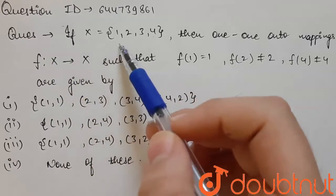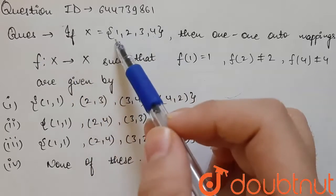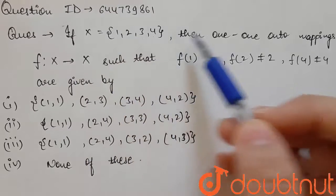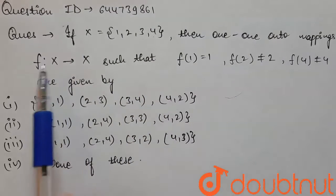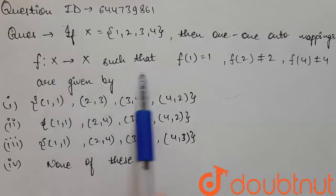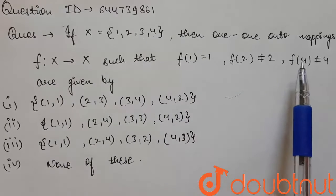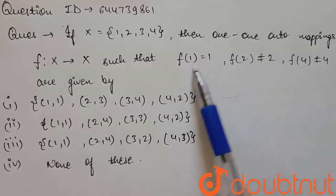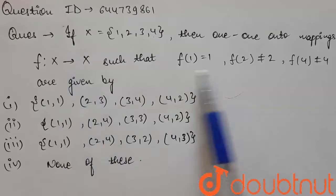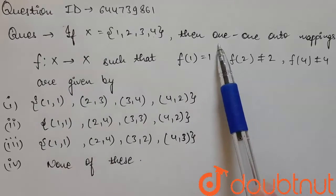Hello friends, so our today's question is: if x equals {1, 2, 3, 4}, so x is a relation given to us, and then one-to-one onto mapping from function f: x to x such that f(1) = 1, f(2) ≠ 2, f(4) ≠ 4 are given by.